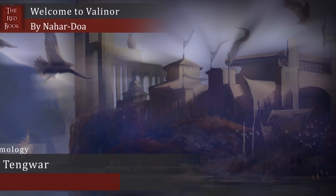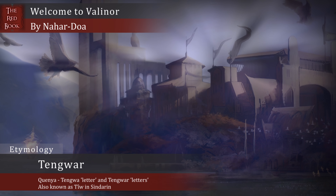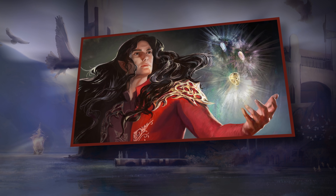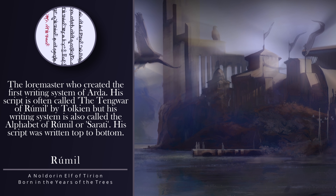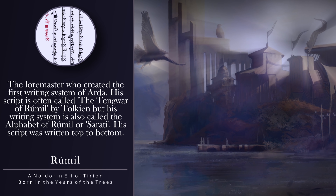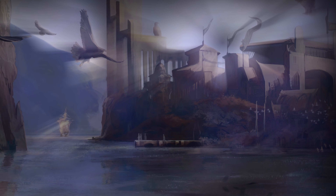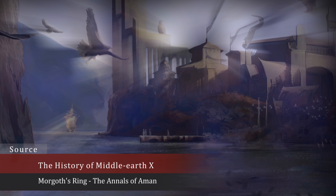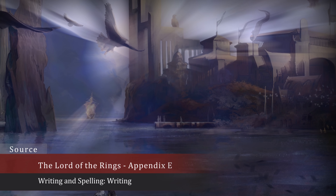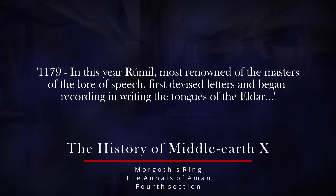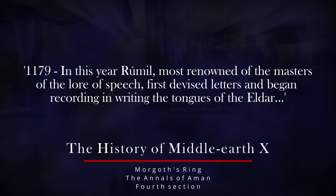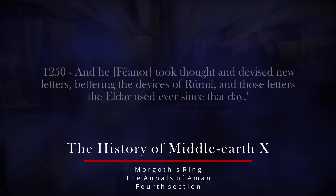The script they are speaking of is called Tengwar. Although Tengwar tends to be attributed to the elf Fëanor, even the Tengwar of Fëanor owes much to the oldest Eldaran letters, the Tengwar of Rúmil. Rúmil was a master of the lore of speech, and first devised letters. He began recording and writing the speech of the Eldar, their songs and wisdom. His letters were not used in Middle-earth, but the Tengwar of Fëanor were. Tolkien describes Fëanor's work as a largely new invention, but they owed much to the older script. Showing the clear genius of Fëanor, he took the letters devised by Rúmil in the year 1179 in the years of the trees, and improved them in the year 1250.